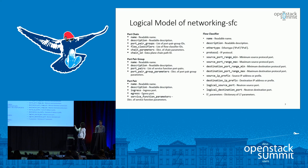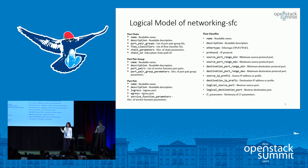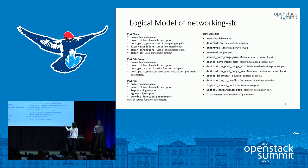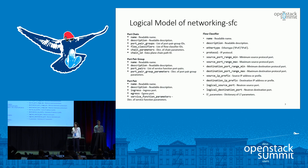This slide shows in more detail the logical models of the service function chain. We have four logical entities: port chain, port pair group, port pair, and flow classifier. The port pair represents a specific service function instance — you specify the ingress port and egress port of that service function. The service function can run on a VM (neutron port), a container, or a physical device. You can also specify service function parameters, such as whether it's a layer 2 or layer 3 type, or a weight for load distribution in the group.